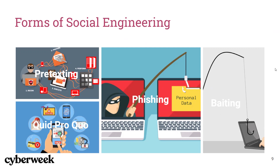Another example of social engineering is called pretexting, where engineers create a fabricated scenario to gain the victim's personal information. Pretexting relies on trust with the victim. Another form of social engineering is called baiting, where attackers promise an item in exchange for login credentials or other confidential information.